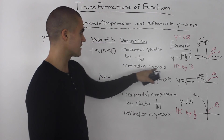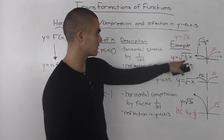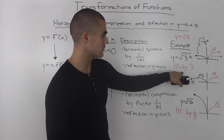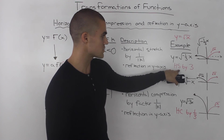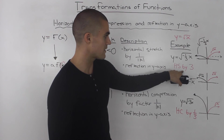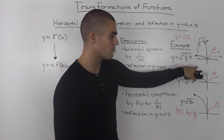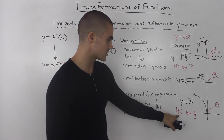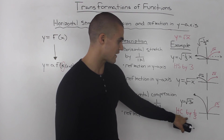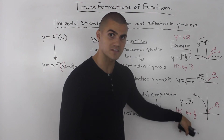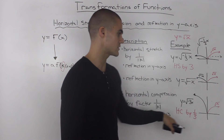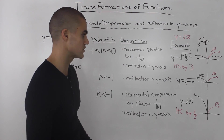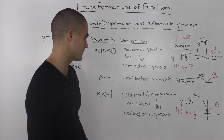To reinforce this: when the k value was −1/3, the function was horizontally stretched by a factor of positive 3. When compressed, it's by a factor of positive 1/3. The factors are always positive when you describe them.